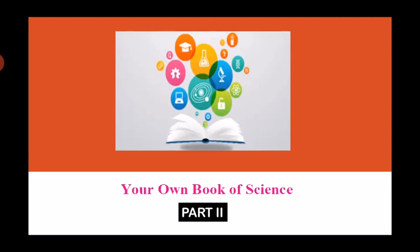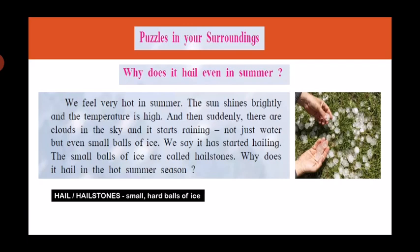We call this doing your research work. Research work means you are questioning and studying why things are happening around you. So let us begin. We will be learning to find out why things happen around us, and that's why the topic's name is 'Puzzles in Your Surroundings.' Surroundings means the place around you, and puzzles means questions — why are things happening around you? The topic I will be teaching you is: why does it hail even in summer?